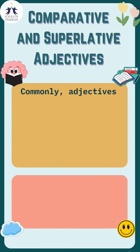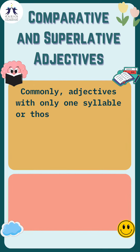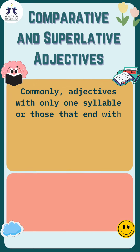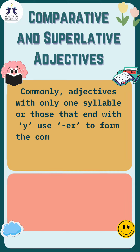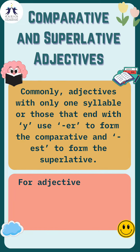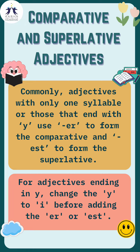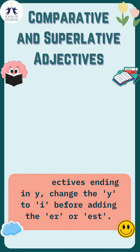Commonly, adjectives with only one syllable or those that end with Y use ER to form the comparative and EST to form the superlative. For adjectives ending in Y, change the Y to I before adding the ER or EST.